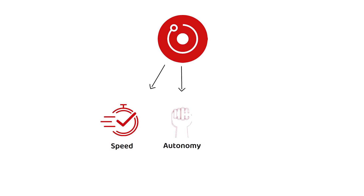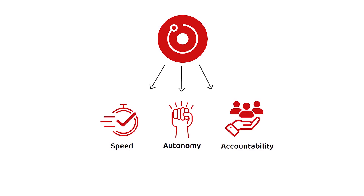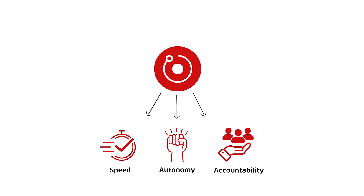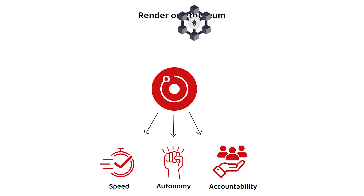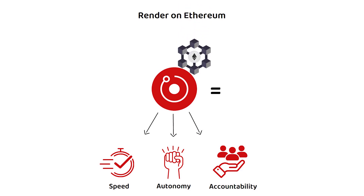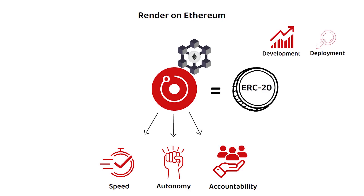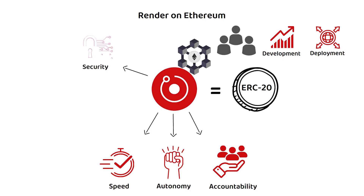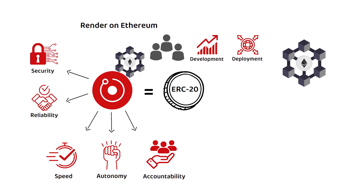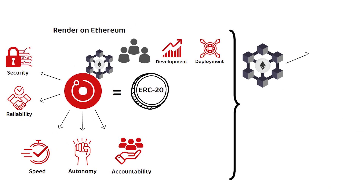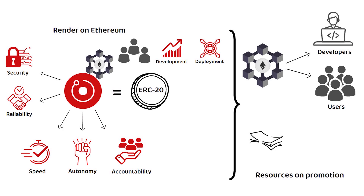Partially to ensure those principles of speed, autonomy, and accountability, Render decided to launch their RNDR token on the already well-established and well-utilized Ethereum network as an ERC-20 token. The benefit of this was that the development and deployment of the blockchain had already been thoroughly tested by Ethereum and its users, ensuring security and reliability for Render and its network. On top of this, as the Ethereum network is already highly popular with developers and users, Render did not have to spend as many resources on promotion.